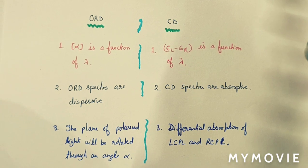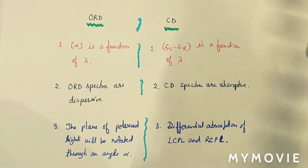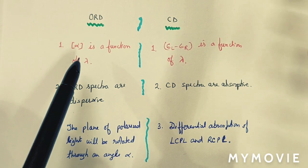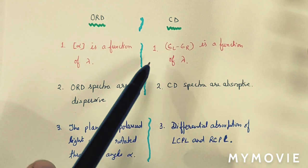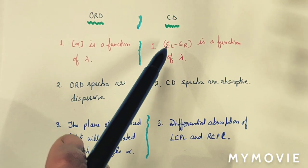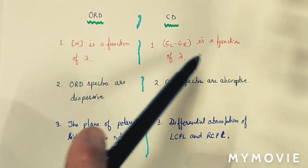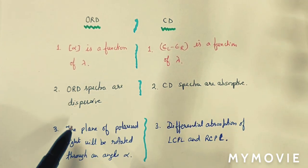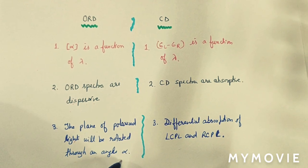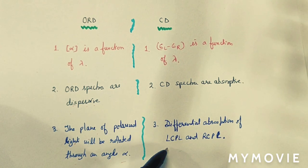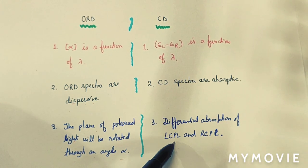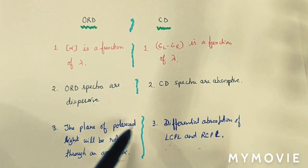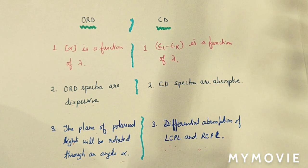The key differences between ORD and CD: In ORD, specific rotation (α) is plotted as a function of wavelength, and the spectra are dispersive in type. In CD, the molar absorptivity difference (ε_L − ε_R) is plotted against wavelength, and the spectra are absorptive in type. In ORD, the plane of polarized light is rotated through angle α; in CD, the differential absorption of LCPL and RCPL is recorded.